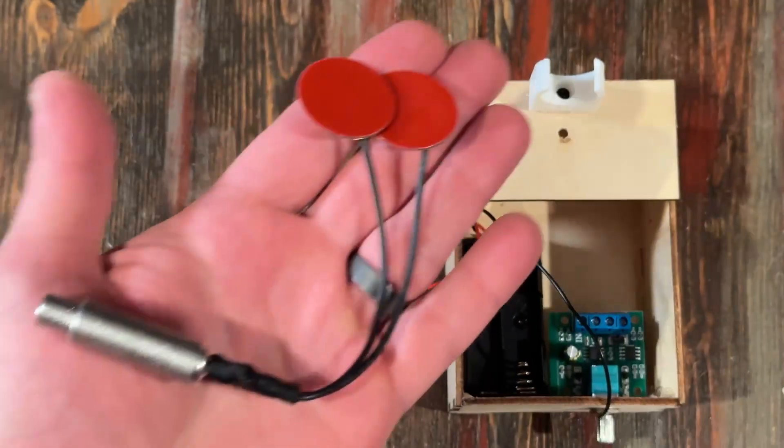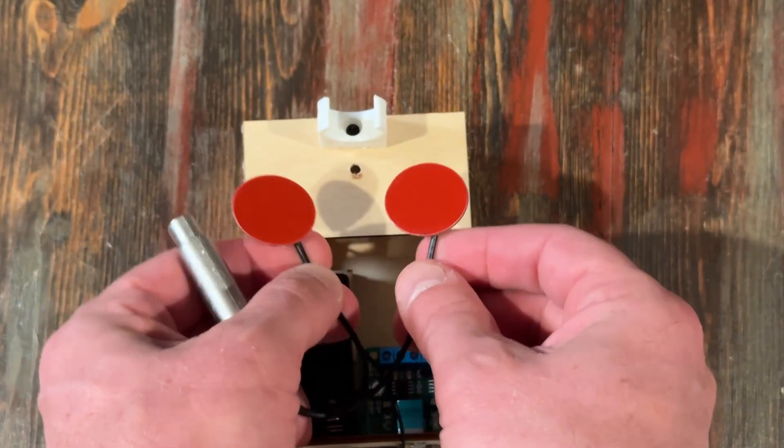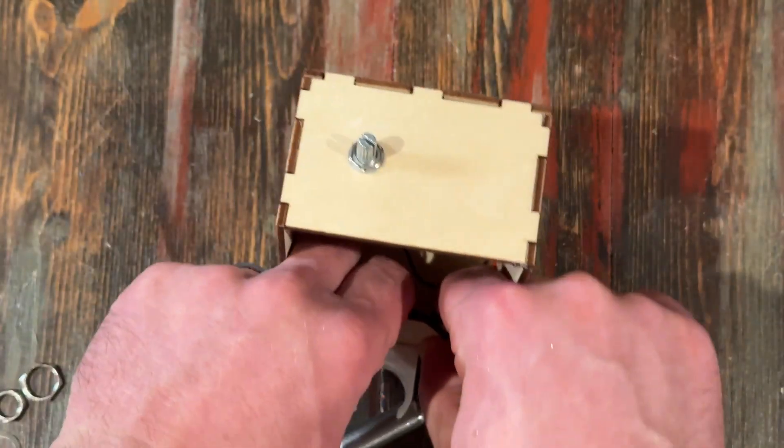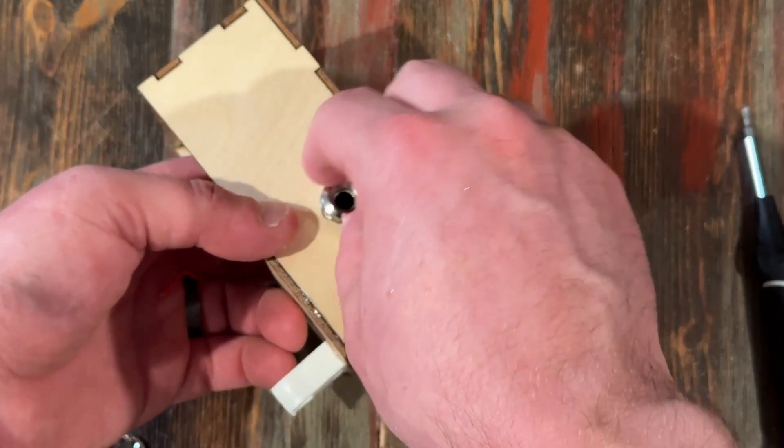And now it's time to install the contact mic. The discs have these sticky backs, so it's easy to attach them under the motor platform like this. Now with them attached, you can place the output jack into its spot.